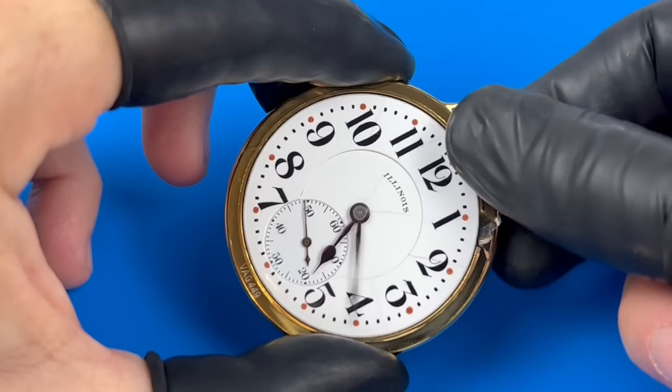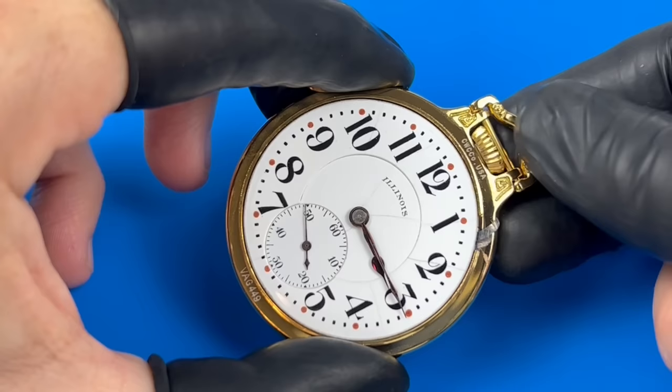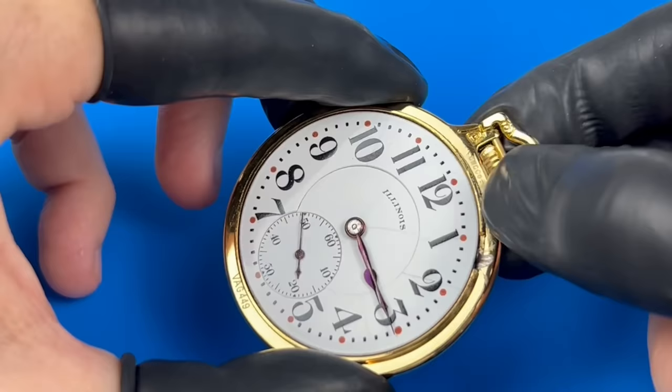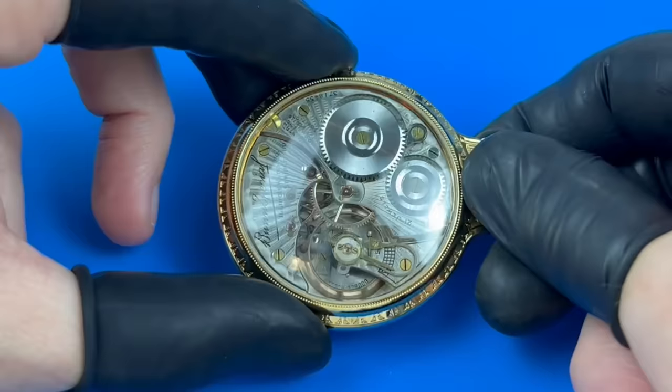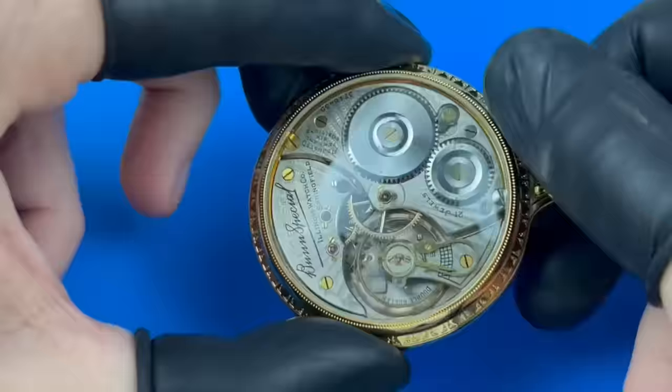For now, I'm just checking the watch over, testing basic functions like time setting, all to establish a baseline before I start taking the thing apart. The movement will run when wound, but it's anybody's guess how well it actually performs. The owner sent this to me asking for it to be serviced, not expecting anything major to be needed.